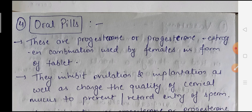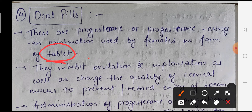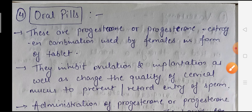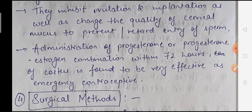Oral pills are progesterone or progesterone-estrogen combinations taken by females in tablet form. They inhibit ovulation and implantation, and also change the quality of cervical mucus to prevent or retard the entry of sperm. The administration of progesterone or progesterone-estrogen combination within 72 hours of coitus is found to be very effective as an emergency contraceptive.